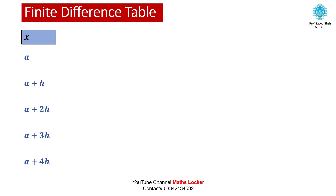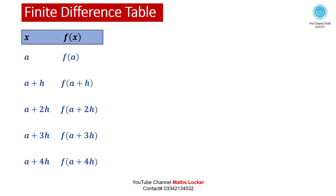For the Finite Difference Table, we write the values of the independent variable x in the first column, and the values of the dependent variable f(x) in the second column. We are taking 5 points with equal length of interval.